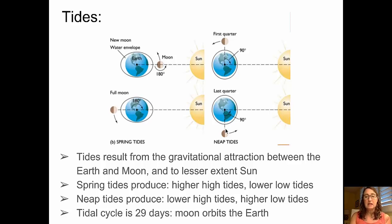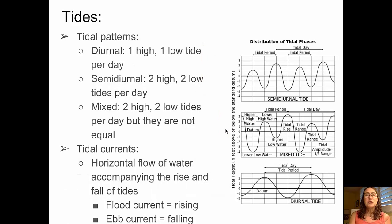In a neap tide, high tide is slightly lower than normal and low tide is slightly higher than normal, and that produces a lower tidal variation from high to low tide. The tidal cycle is about 29 days.